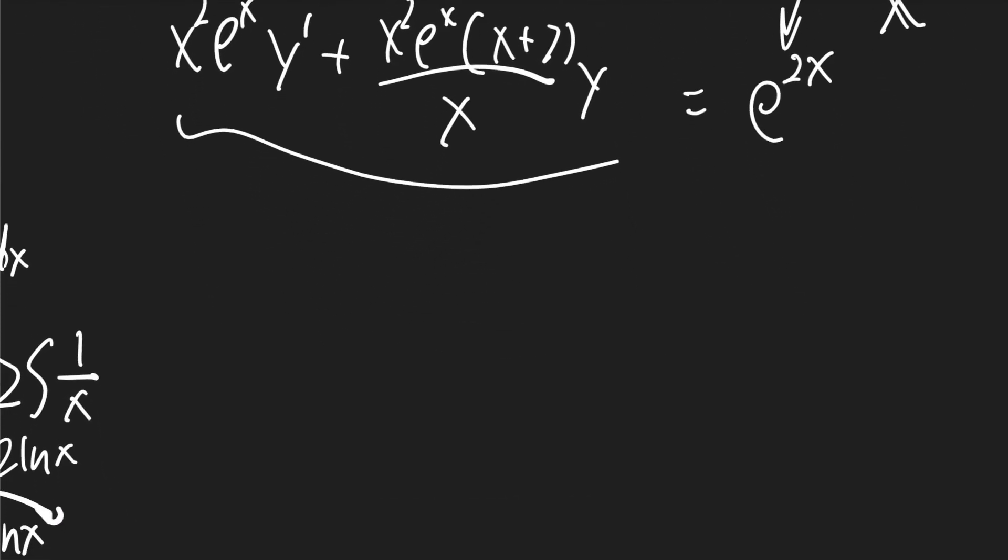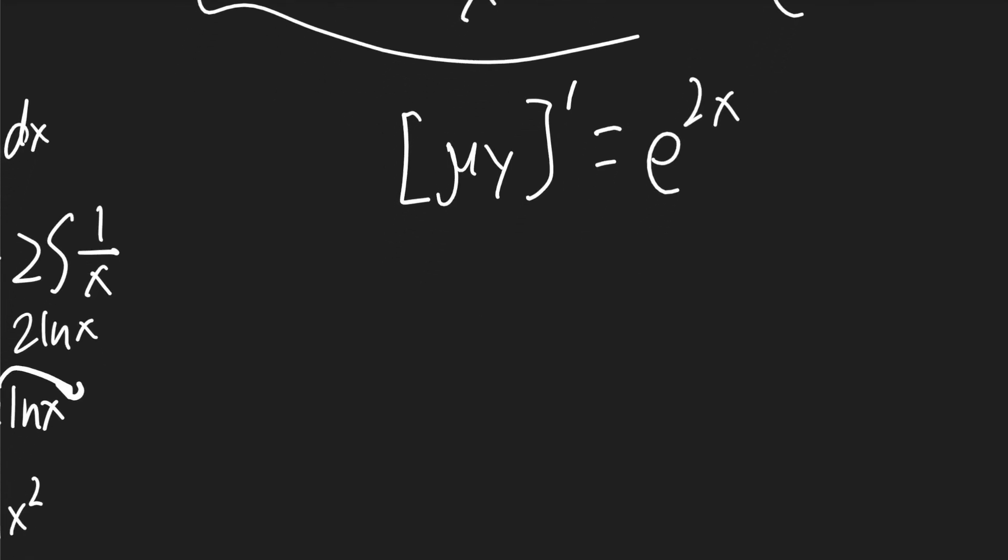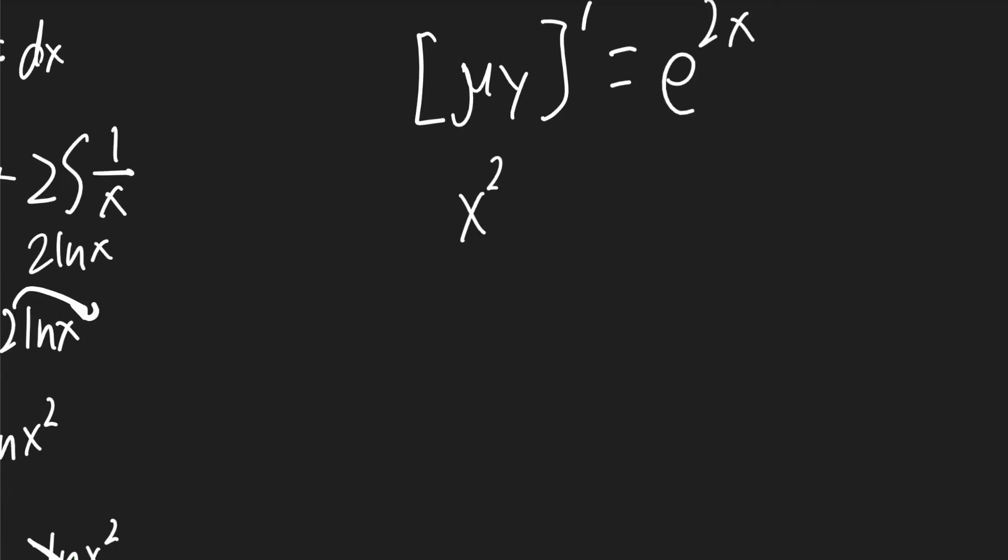I know that that left-hand side is just the product rule of mu times y. When you take its derivative, that's going to be equal to e to the 2x. Mu we said was x squared e to the x times y. And then take its derivative. That'll be equal to e to the 2x.